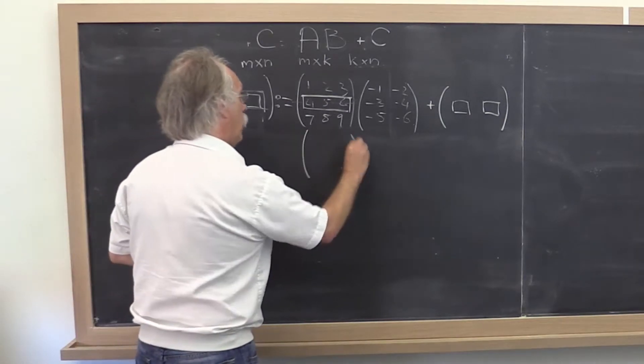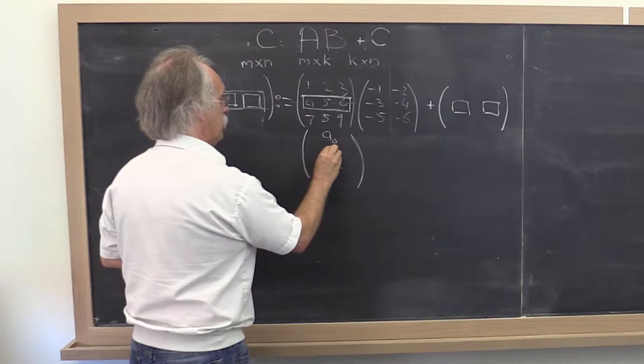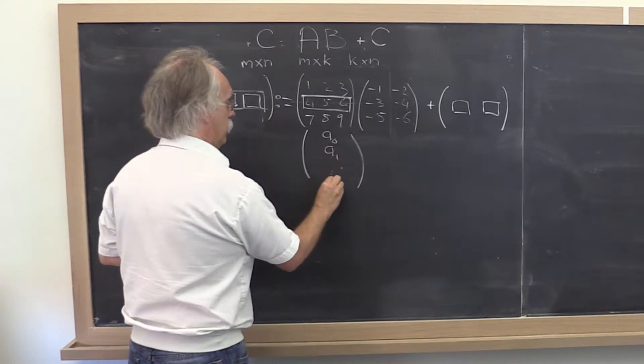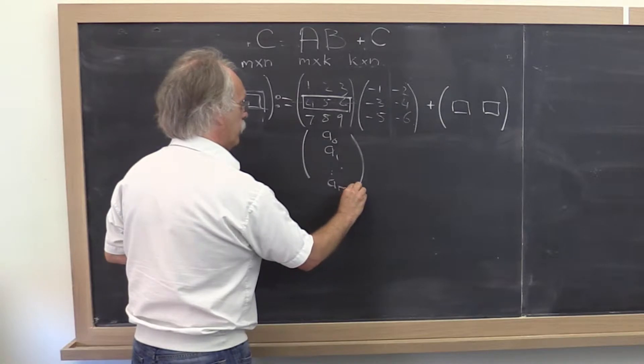We can say, well, what happens if we take our matrix A and partition it into rows? Let's see, M minus one of those.